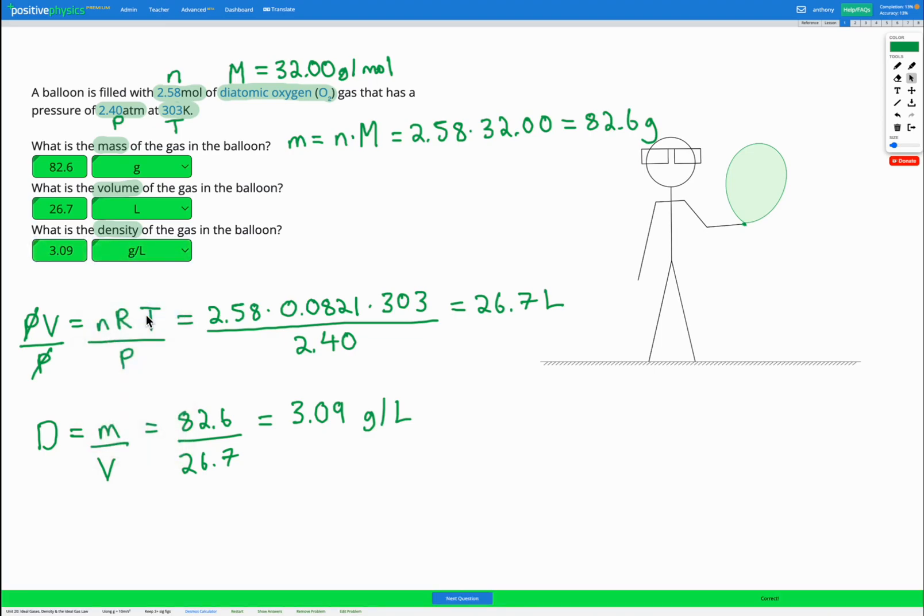So you can see this skill brings together several different skills from the past. Firstly, we've got using the molar mass and the number of moles to find the mass. Then we've got using the ideal gas law to find the volume of gas in the balloon. And finally, we're using the density equation to calculate the density from the mass and volume we've just found. So there's several different steps within this skill. Remember, your temperature's got to be in Kelvin for you to use that ideal gas law equation. So if you're given the temperature in degree C, make sure you convert to Kelvin first before you put that in your ideal gas law equation.